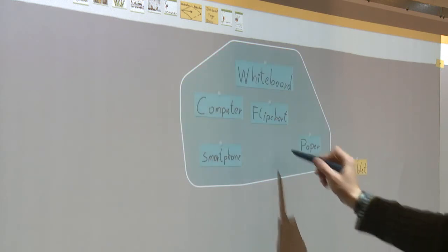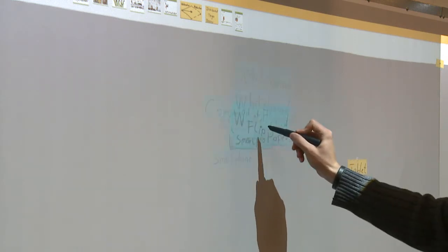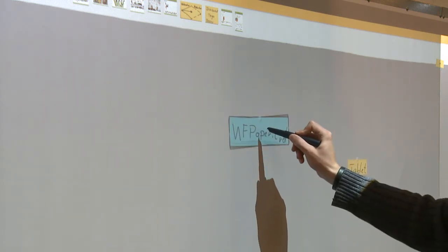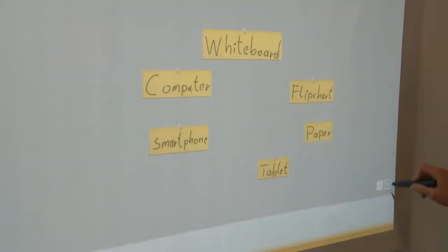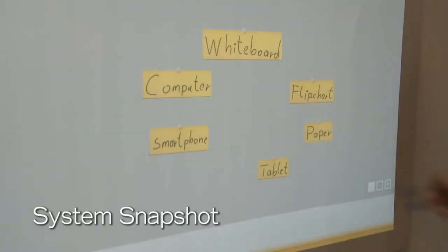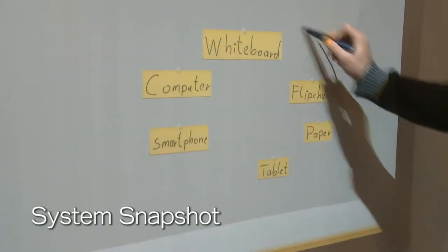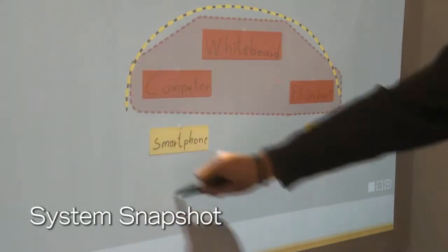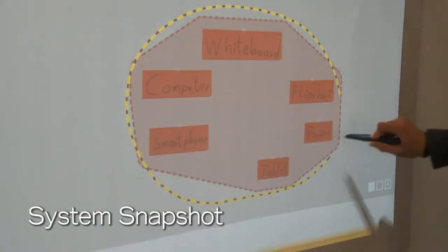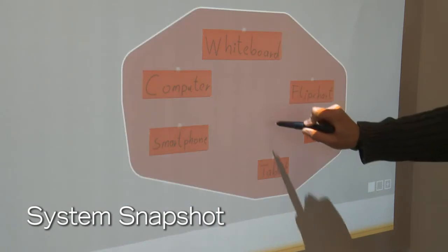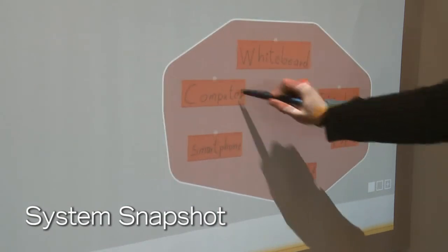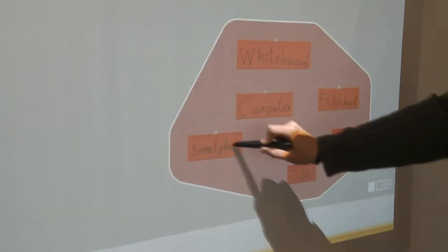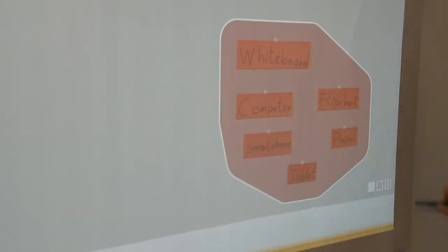Groups can be compressed to change spatial layout. The system also provides means to save the state of the system. This enables returning to a previous state by switching between states to explore other possibilities.